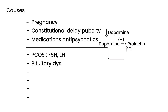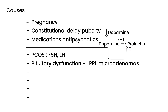After PCOS is pituitary dysfunction. The pituitary gland secretes many hormones that can disrupt the HPO axis. Most commonly we're talking about prolactin. Sometimes you can get microadenomas — little tumors — in the pituitary, and these tumors can cause excess prolactin, disrupting the HPO axis and causing amenorrhea. Next is ovarian failure: if the ovary isn't functioning properly, estrogen levels drop significantly, which disrupts the axis and causes amenorrhea.